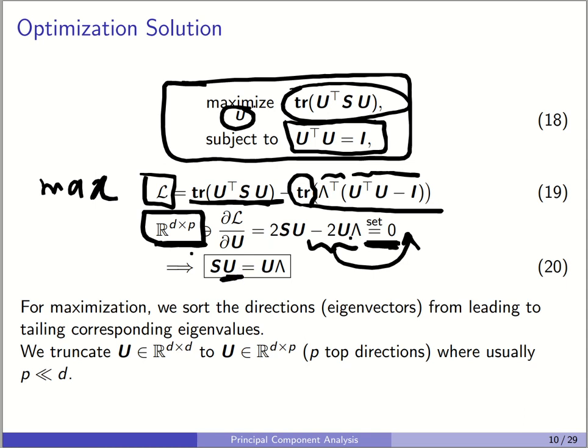If we use all PCA directions, we have a rotation of coordinates and the reconstruction error is zero. If we use only some of them, we have a subspace and a reconstruction error. In this figure, we project onto one direction and observe reconstruction errors. The reconstruction error is minimized when using all directions, and increases as we use fewer directions, especially the least important ones.